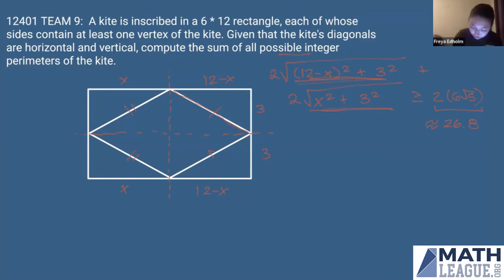So basically, our maximum is going to be two times the square root of zero squared plus three squared plus two times the square root of 12 squared plus three squared, and that is going to be equal to six plus six root 17, which is around, plugging that into our calculator again, 30.7.